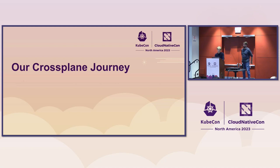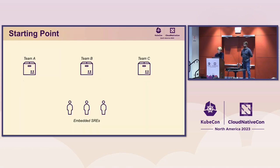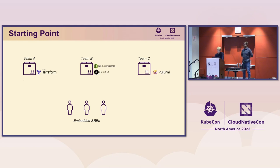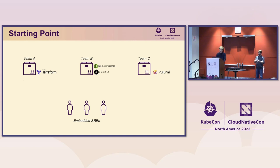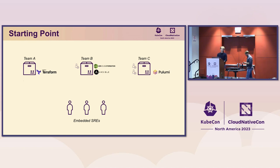Let's talk about our Crossplane journey. Our starting point looked like this: we had teams with an embedded SRE model, working as part of multiple teams. The environment was fragmented — one team using Terraform, another using Ansible with CloudFormation, and a third using Pulumi. Also, maturity was quite different across teams: Team C had a dedicated SRE and DevOps, Team B only DevOps, and Team A didn't have anyone.